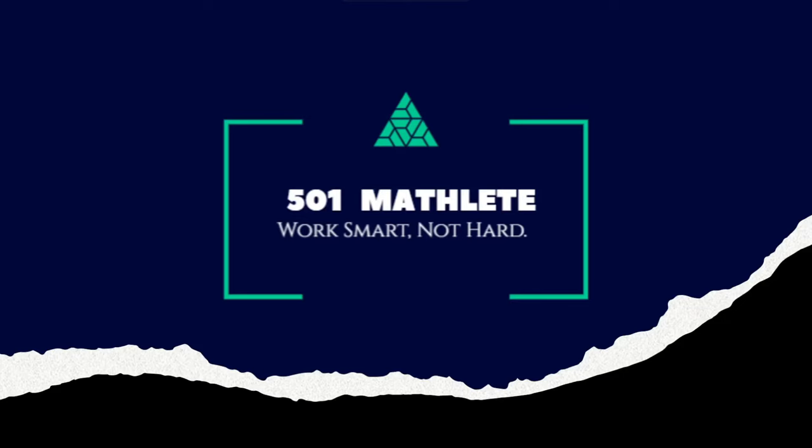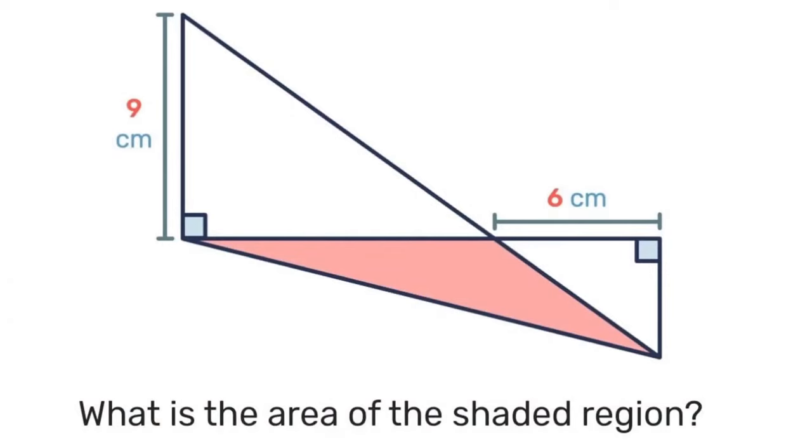Welcome to 501 Mathleet, where we encourage you to work smart, not hard. On today's problem, we have two triangles that are in white. For the bigger triangle, we know the height is 9 centimeters, and for the smaller triangle, the base is 6 centimeters. Based on that information, we are to find the area of the shaded region.